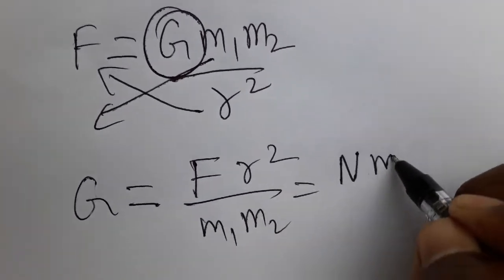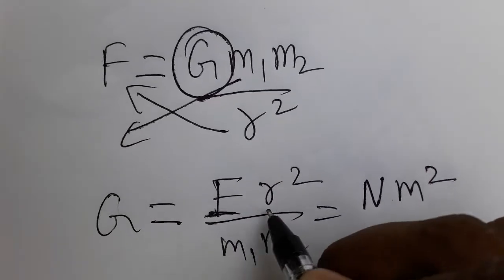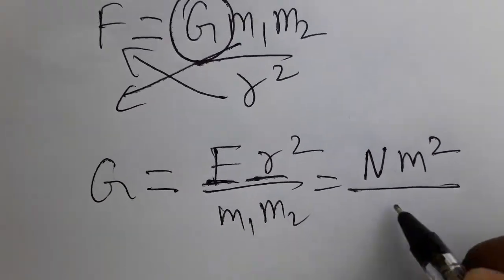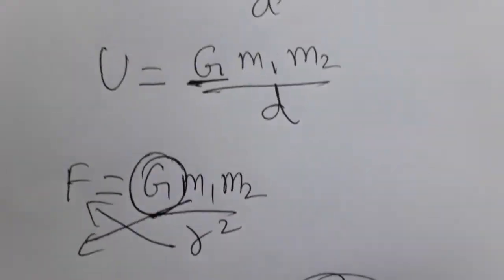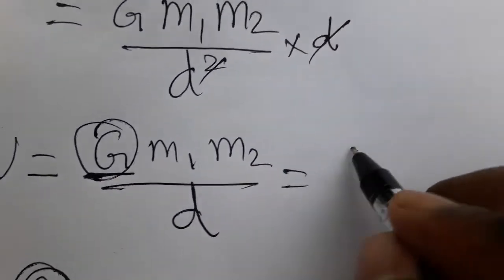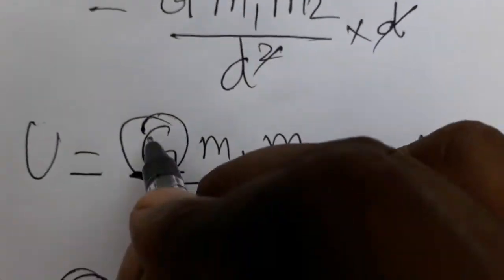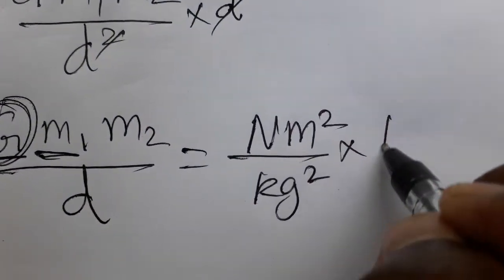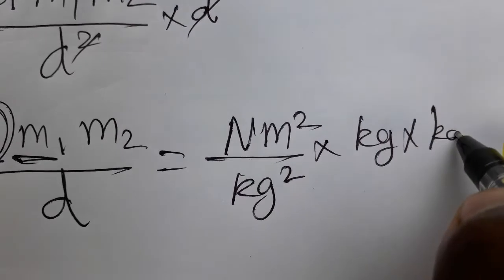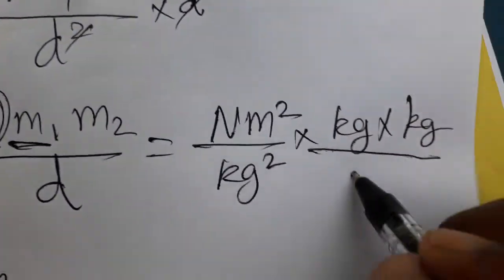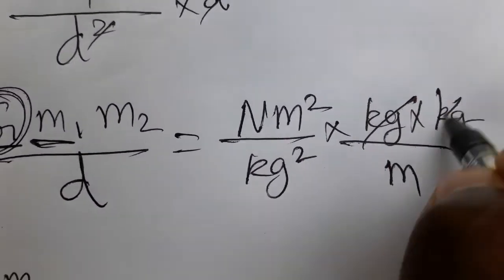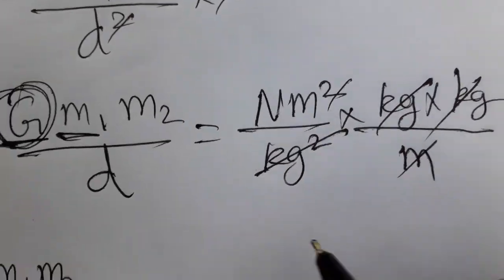So we found G value. G value is newton meter squared divided by kg squared - this is the SI unit of G. Mass SI unit is kg into kg, distance SI unit is meter. kg kg gets cancelled, meter meter gets cancelled, so we proved it's newton meter. Force into displacement tells us the energy.